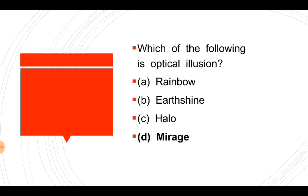Illusion is an illusion. Rainbow is actually formed. Earth shine is actually there. Mirage is an optical illusion. We have a mirror — mirage is a light-related property. It is an optical illusion.